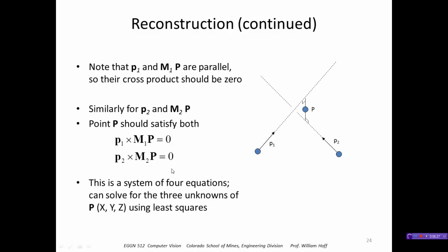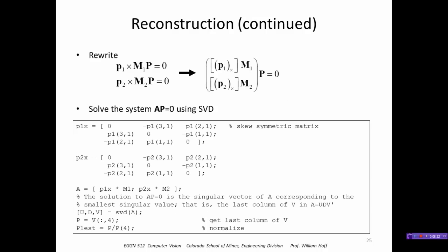So we want to solve for P using least squares. The way we do this is we represent the cross product as a product of these equivalent skew symmetric matrices. So now this is a matrix called A multiplied by P and that's equal to 0. So we form A by taking the skew symmetric matrix corresponding to P1, here's the skew symmetric matrix corresponding to P2.